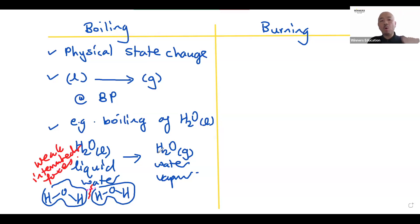So this is what we call boiling, it's a physical state change. The water molecule is still a water molecule when it's converted from liquid water to water vapor. It's just that the molecules are further apart. So instead of the molecules being quite close together, now the water molecules, they are a bit further apart. So this is boiling.